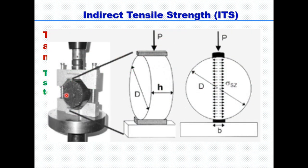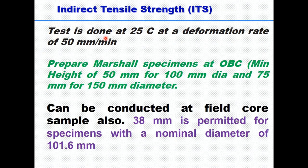In the assembly, the Marshall specimen is kept between two strips and the diameter of the sample is facing you. We apply the load on the periphery of this sample, and when you apply a compressive load, this sample will split into two parts. Tensile stress is created along the diameter and it will split into two parts, which is why it is called the indirect tensile strength test.